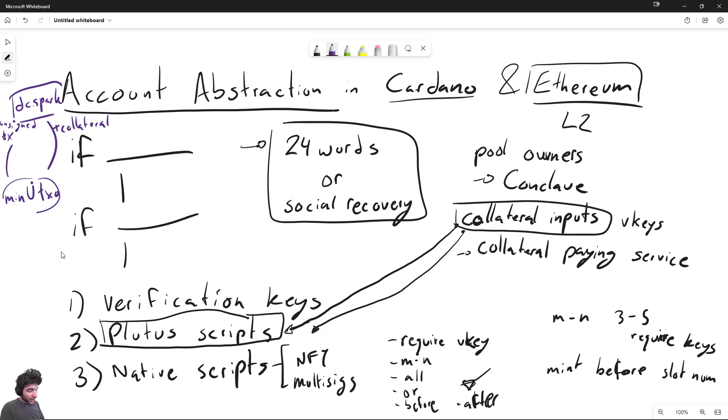So maybe somebody will try and make a for-profit service for this anyway. This is one of the main limitations and why nobody has really built a collateral paying service so far. However, if we do have a collateral paying service, for example, if DC spark builds one, then this would facilitate having account abstraction for Plutus, because it means that although they cannot pay collateral directly, they could defer putting up collateral to a service.